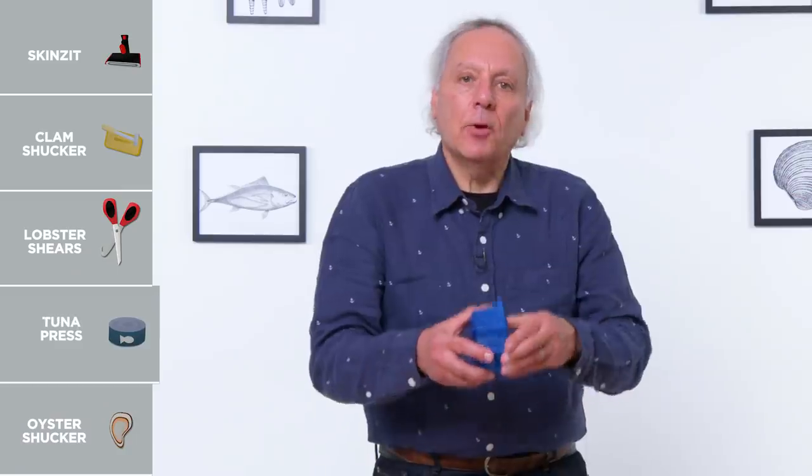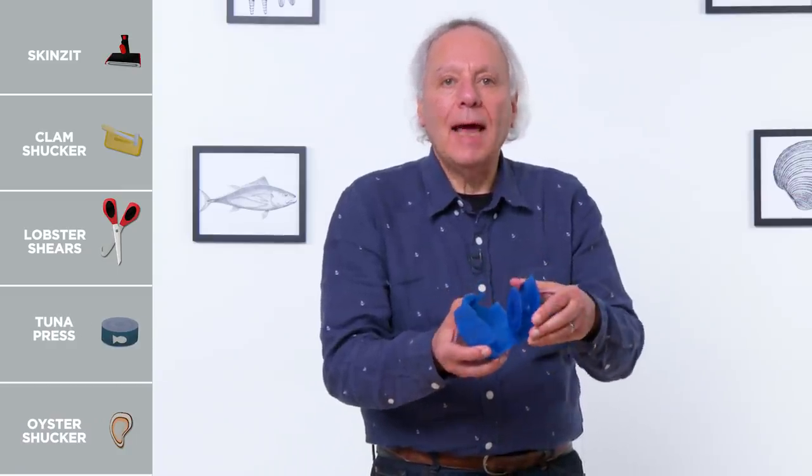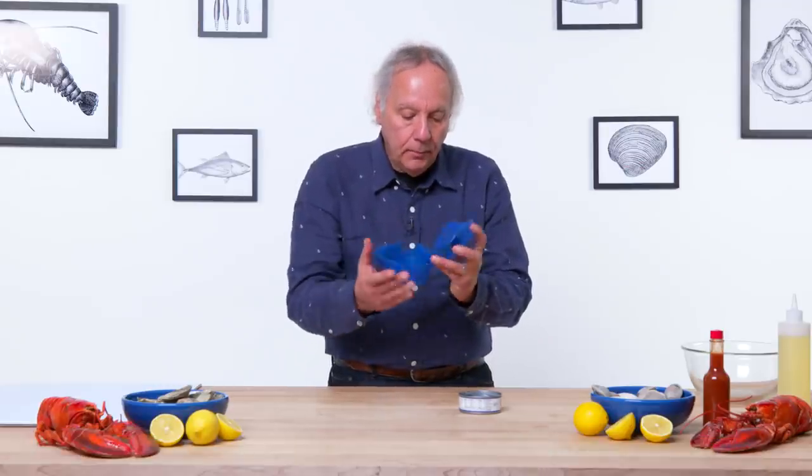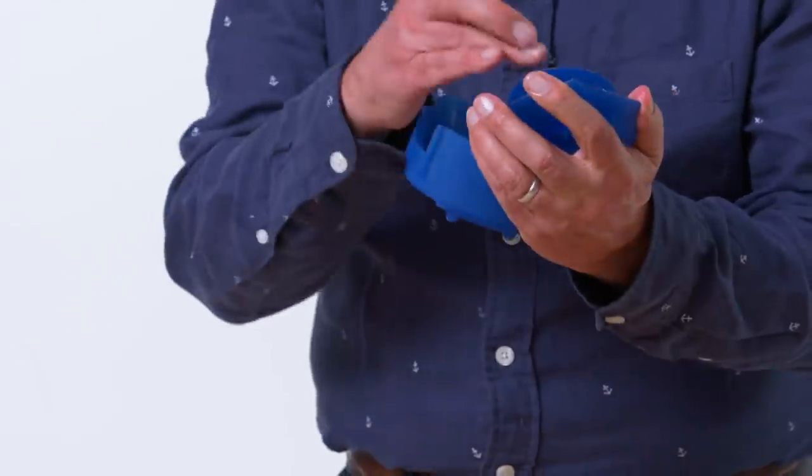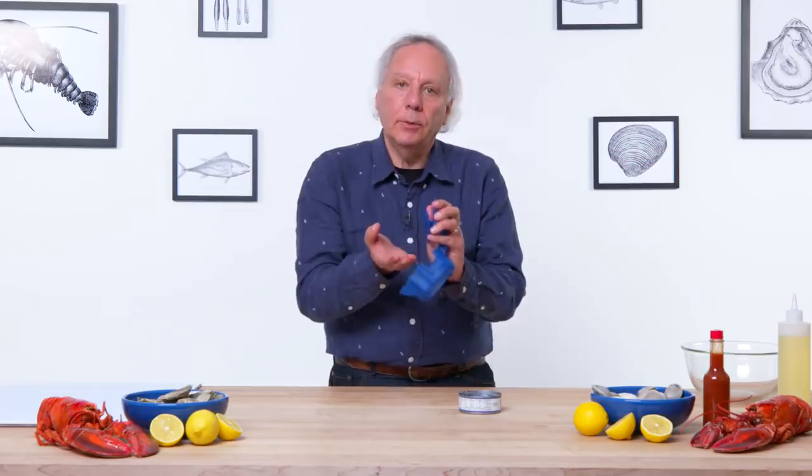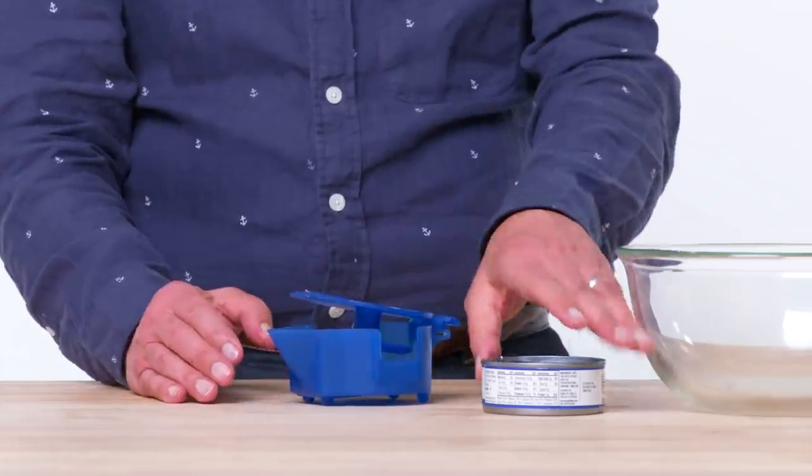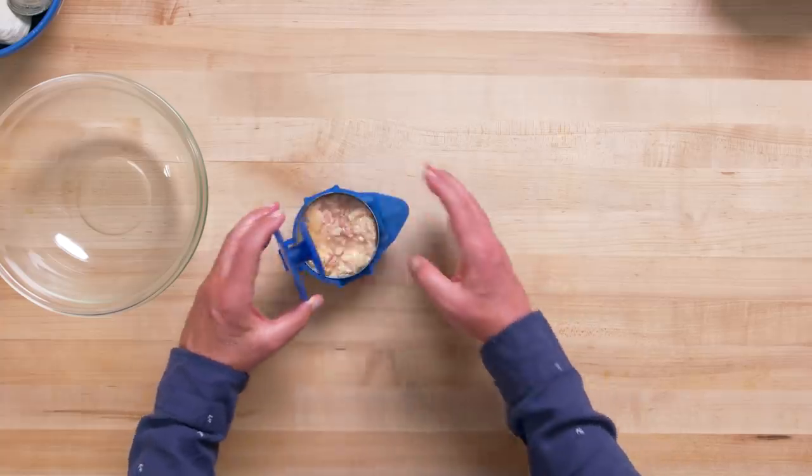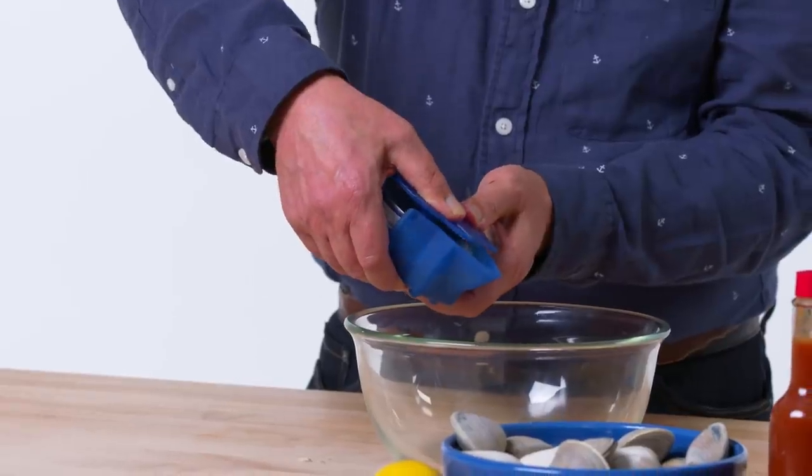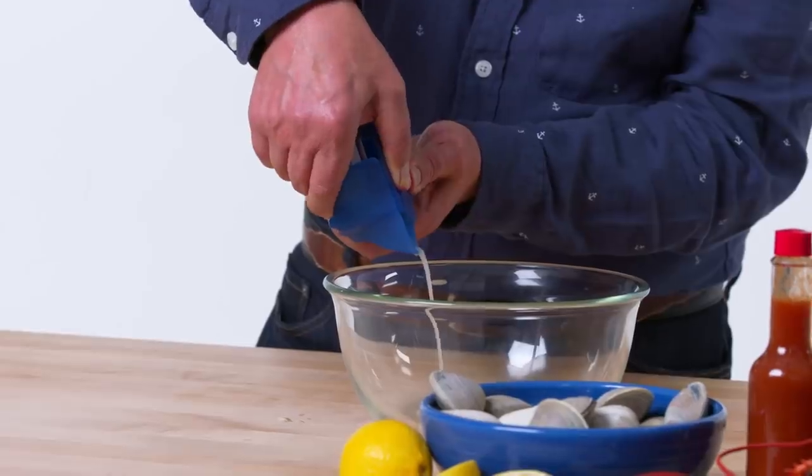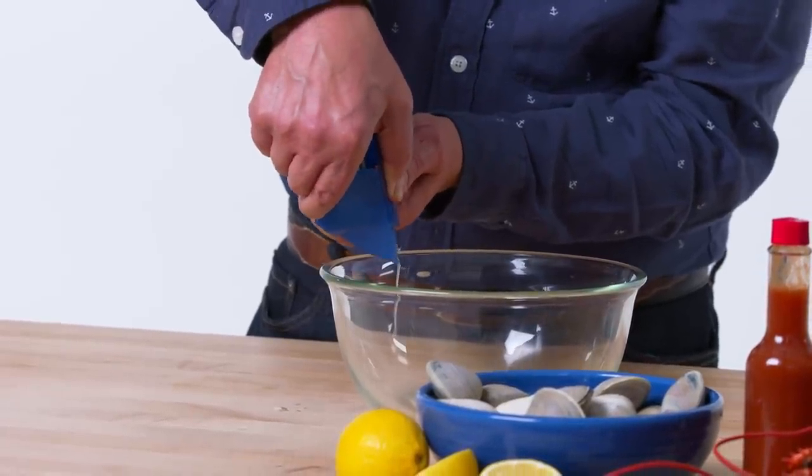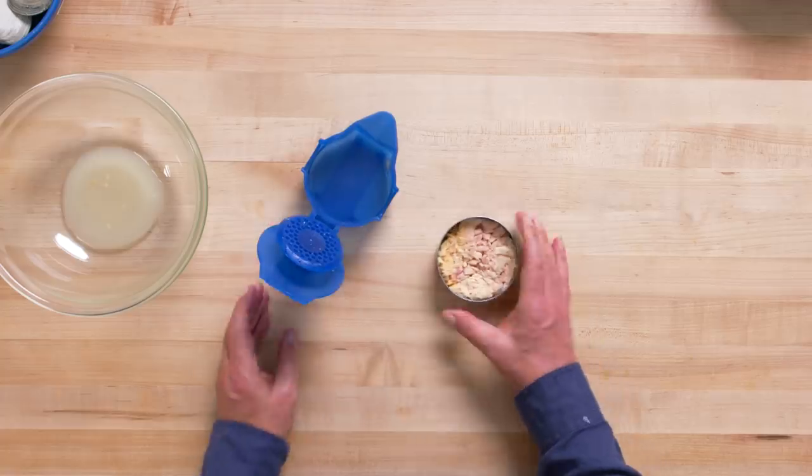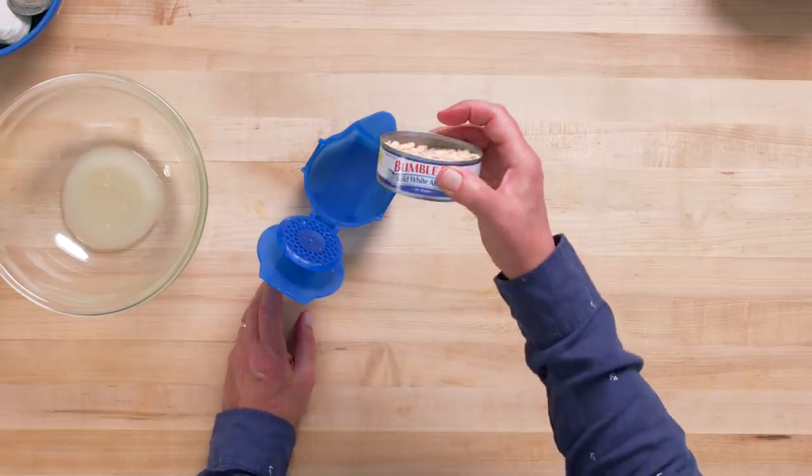Tuna press. It's purpose in life is to squeeze the oil or water out of a can of tuna. Let's see how effective it is. The way this is designed is there is a plate here that's gonna come down on that can of tuna. The plate has holes in it, so the liquid is going to ooze through those holes. I've got a pre-opened can here of tuna and water. I'm gonna remove the lid completely, place the tuna can inside, close it up, and start squeezing. I'm gonna do this this time with two hands. And the water is coming out. And what we've got here is a almost dry can of tuna. So that worked.